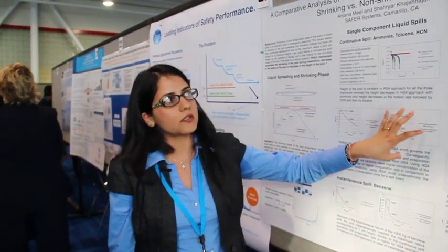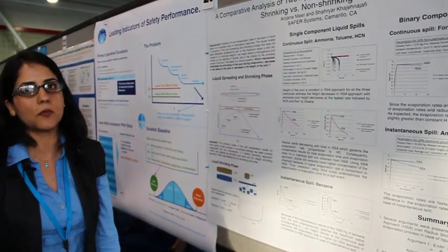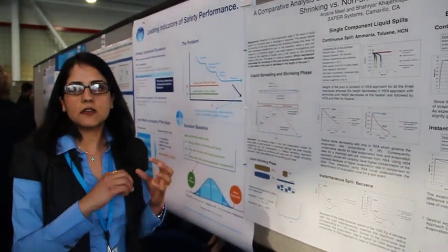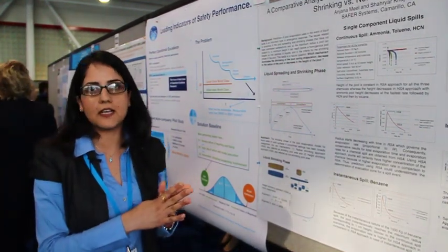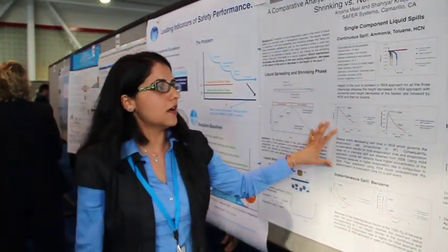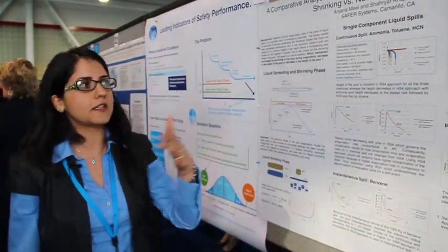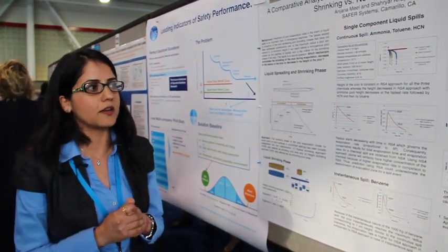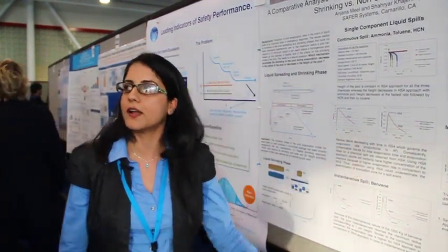We feel this is really important because we are going to use this in our software, Safer Systems, which does consequence modeling. The software is used when there is a release — the plume travels based on wind conditions and affects people surrounding the release area. If we do a better job of predicting the evaporation rate and total amount evaporated, it's going to give a more realistic answer for how many people need to be evacuated.